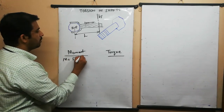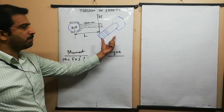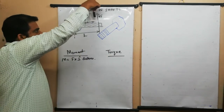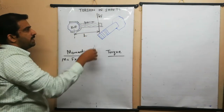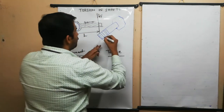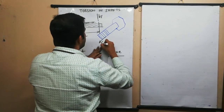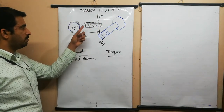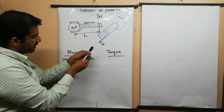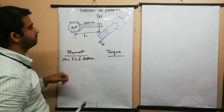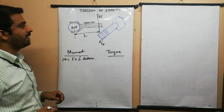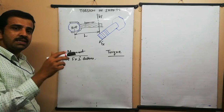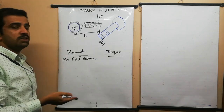Moment is equal to force multiplied by perpendicular distance. Now considering the same bolt — if we apply a tangential force on the spanner in a certain direction, the force acts tangentially on the bolt. By turning the spanner we give motion to the bolt, causing it to rotate. The force we apply here is a torque, because the member is subjected to rotation upon application of an external force.